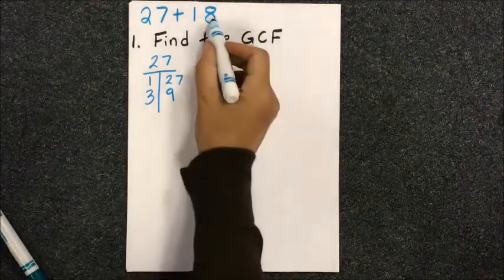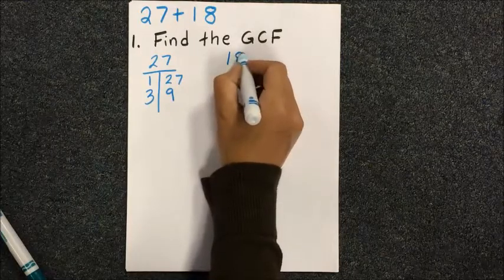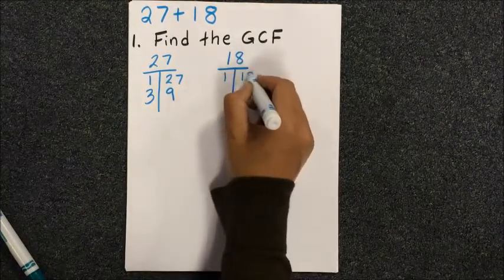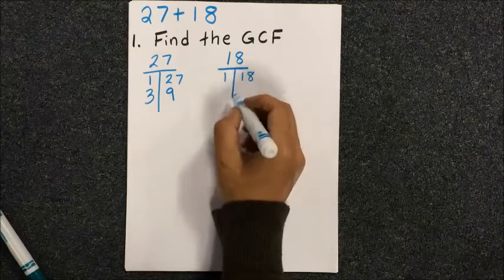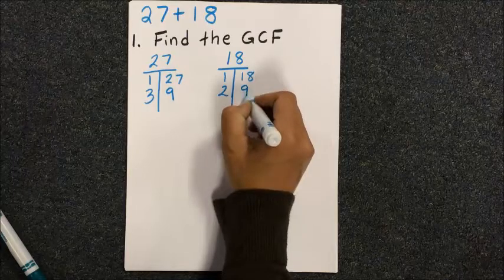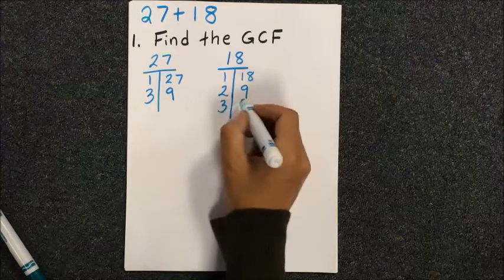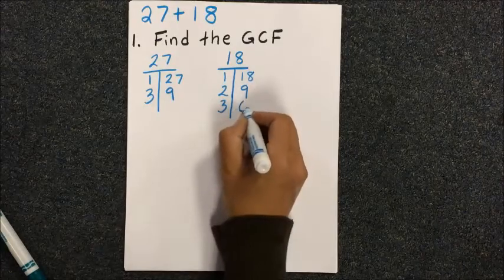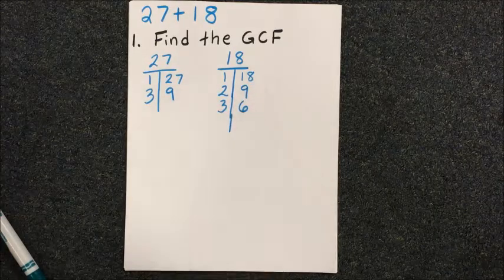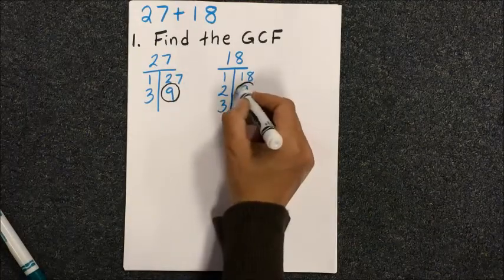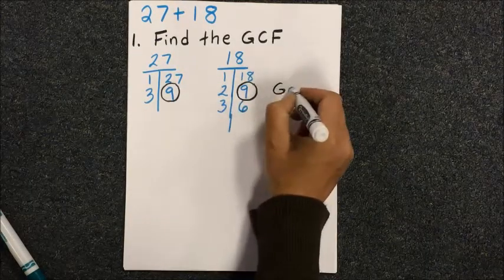So 1 times 27 and 3 times 9 will give us the product of 27. Then list out the factors for 18. Knowing your math facts is really going to help you because you'll become less frustrated if you can do mental math and just know what you need to multiply to get those numbers.